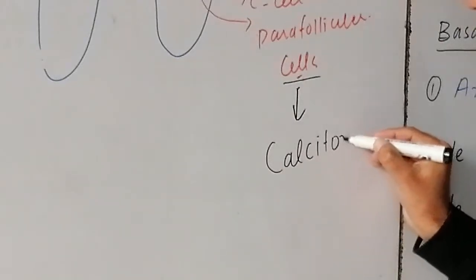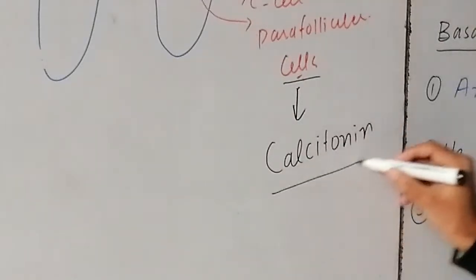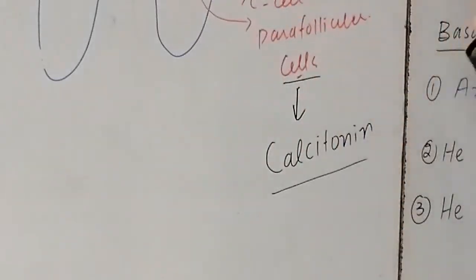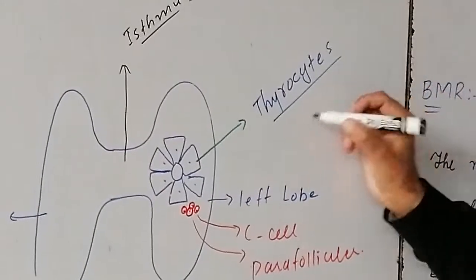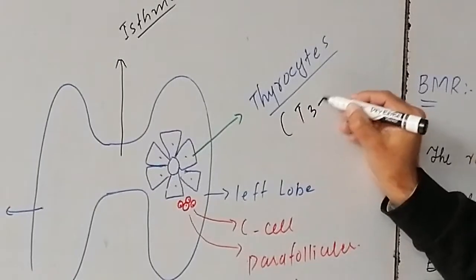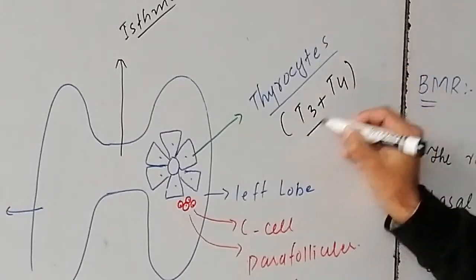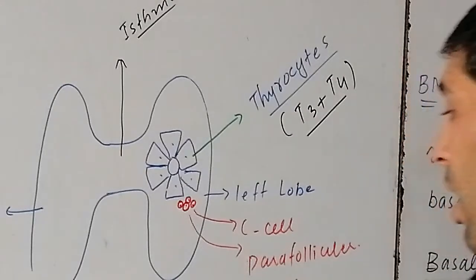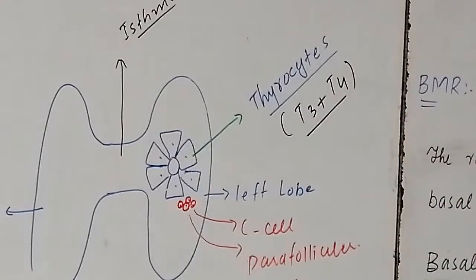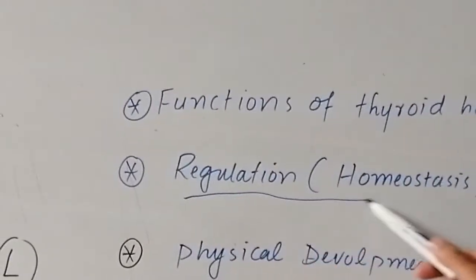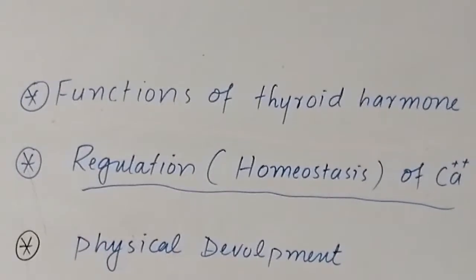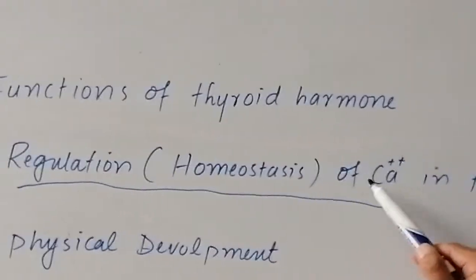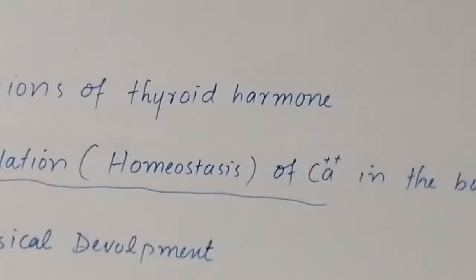So dear student, calcitonin is produced by parafollicular cells, and T3 and T4 are produced by thyroid follicular cells. Calcitonin's main function is regulation of homeostasis of calcium in the body.